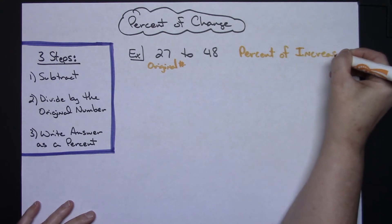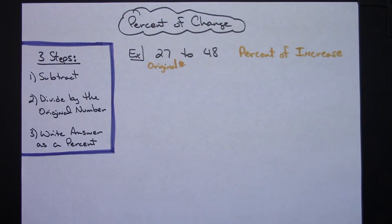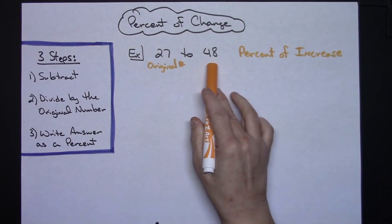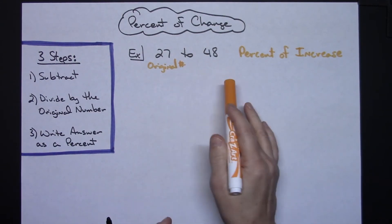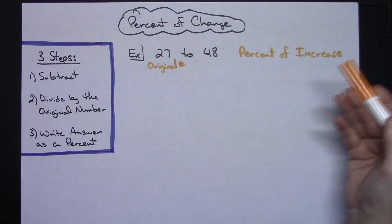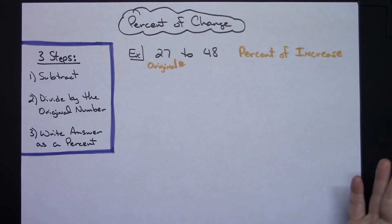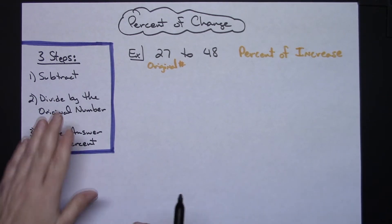Now I could have had a percent of decrease if the numbers would have gotten smaller. If I would have started at 27 and then maybe went to 20, the number would have decreased, so that would have been a percent of decrease. That's pretty straightforward. It's either going to be one or the other. It's percent of change, so it's either going to be increasing or it's going to be decreasing.